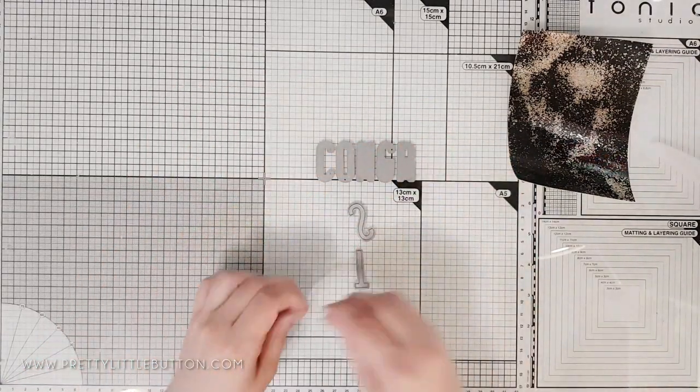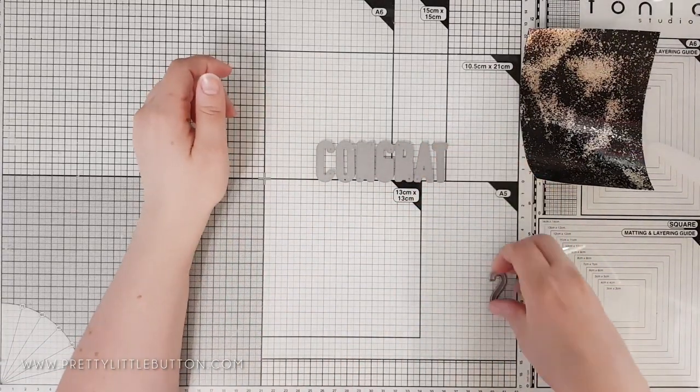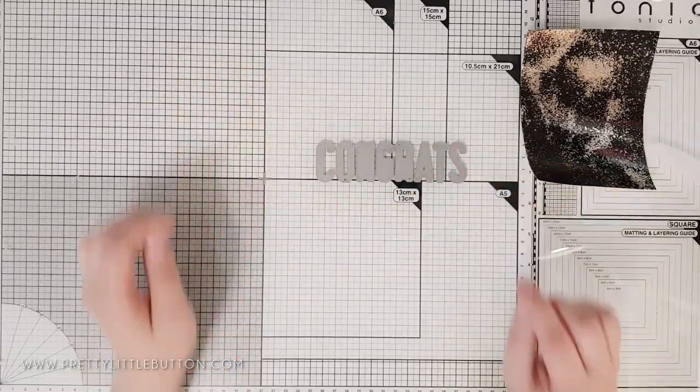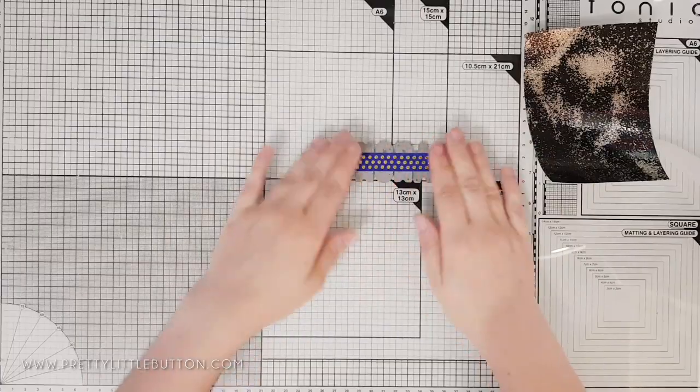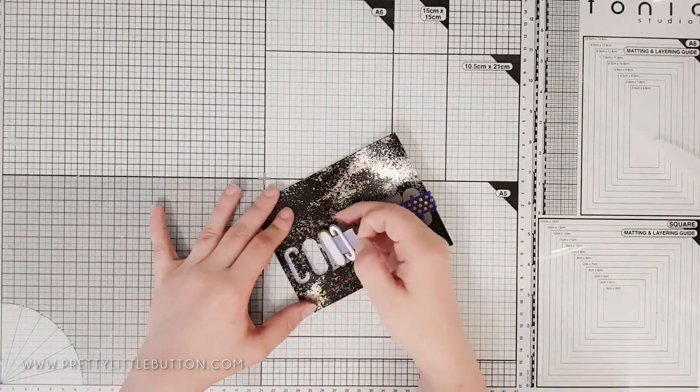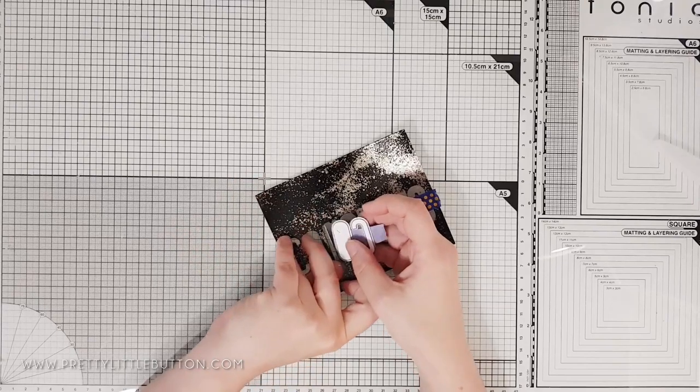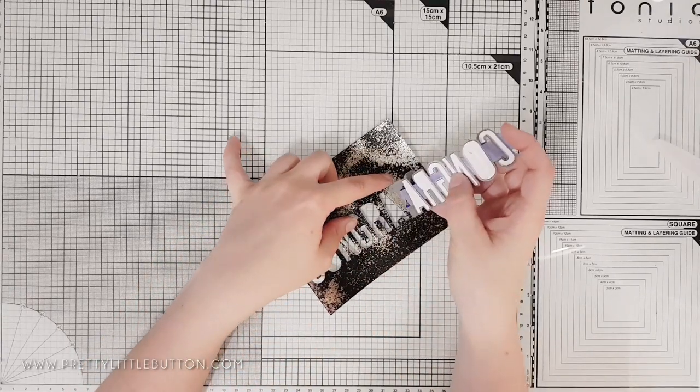So I'm using the Altenew Fine Alphabet dies and my glass mat to spell out the word congrats, and then I'm using the lines on my mat to align the letters to make sure they're straight and then placing a piece of washi tape over the top just to keep all the letters together. This allows me to now pick up all the letters and position it over the panel, so ensuring my letters will cut straight.